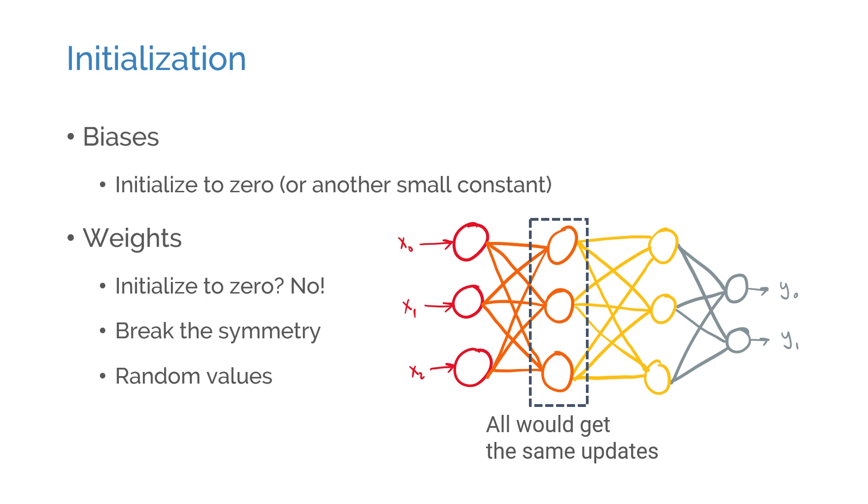A very common initialization algorithm is the Glorot initializer, also known as the Xavier initializer. Glorot initializer randomly samples the weights from a uniform distribution, where the range is determined by the number of inputs and the outputs to keep the activation and gradient variance under control. This is the default initialization method in some frameworks.